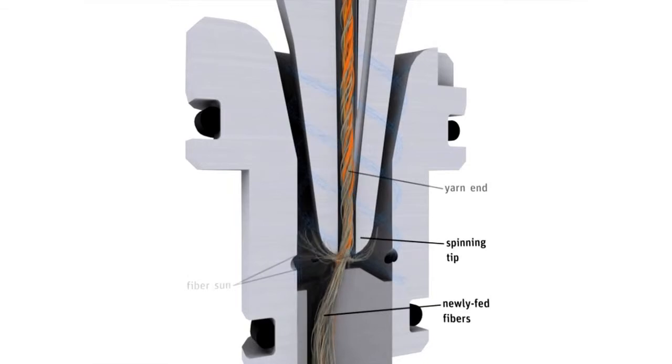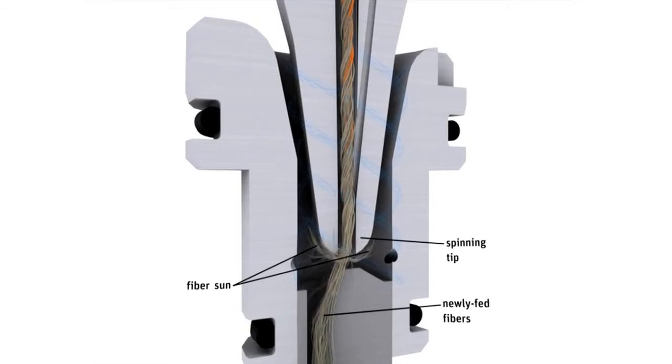The ComfortJet piecing process therefore guarantees that the yarn end and new fibers are perfectly intertwisted and piecer strength reaches stable values.